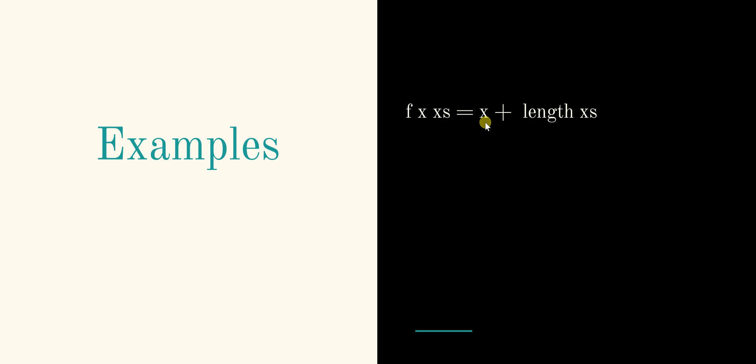So then x, what would x be? We don't know. So for now we're going to say x is of type A, and xs is of type B. Okay. So then, x is of type A, so then we know, because of the addition, that the other side has to be of the same type. Right? So they can be added together.